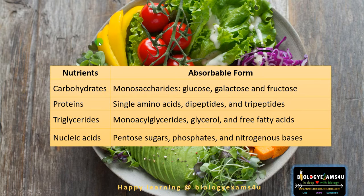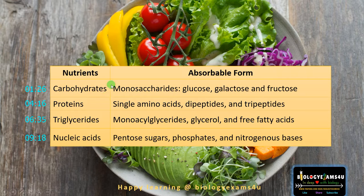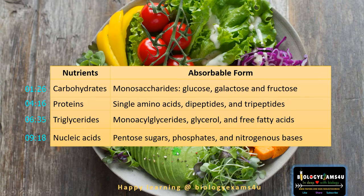These are the major nutrients present in the food: carbohydrates, whose absorbable form is monosaccharides like glucose, galactose and fructose. Proteins should be broken down to amino acids, dipeptides or tripeptides for absorption, whereas triglycerides or lipids should be broken down to glycerol and free fatty acids, whereas nucleic acids must be broken down to pentose sugars, phosphates or nitrogenous bases for absorption into the body.